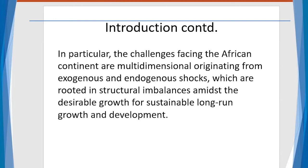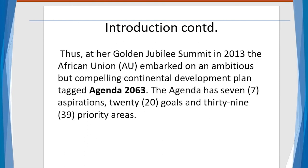These challenges are rooted in structural imbalances amidst desired sustainable long-run growth and development of Africa. At the Golden Jubilee Summit in 2013, the African Union embarked on an ambitious but compelling continental development plan tagged Agenda 2063. The agenda has seven aspirations, 20 goals, and 39 priority areas.